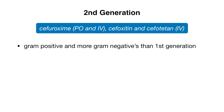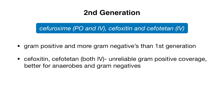For second generation cephalosporins, we have cefuroxime, cefoxitin, and cefotitan. These offer more gram-positive and more gram-negative coverage than first generation antibiotics. However, cefoxitin and cefotitan — both IV — offer unreliable gram-positive coverage, so they're better for anaerobes and gram-negatives. Importantly, these are the only two cephalosporins from the entire class that provide anaerobic coverage.